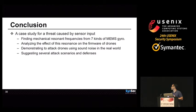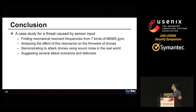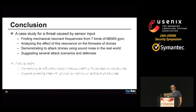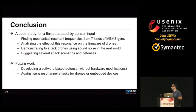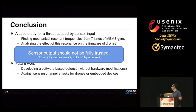In summary, our work is a case study for a threat caused by malicious sensor input. We found the resonant frequencies from seven kinds of MEMS gyroscope, and we figured out the effect of resonance in drone firmware and demonstrated our attack against a drone in the real world. We also suggested several attack scenarios and defenses. Because most existing defenses need some modification in hardware, we are now interested in developing a software-based defense against sensing channel attacks. Sensor output should not be fully trusted, because there are always bad guys like us. Thank you for listening.